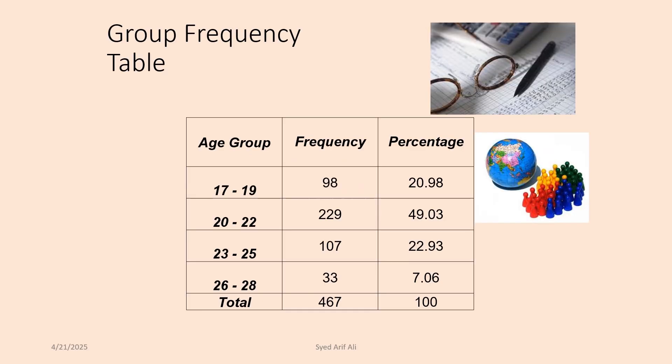There are two types of frequency tables: grouped frequency table and ungrouped frequency table. In a grouped frequency table, we make groups of a continuous variable and find the frequency of those groups.